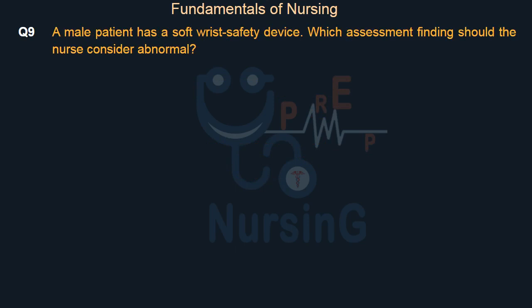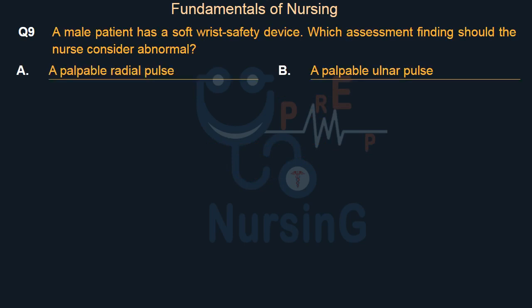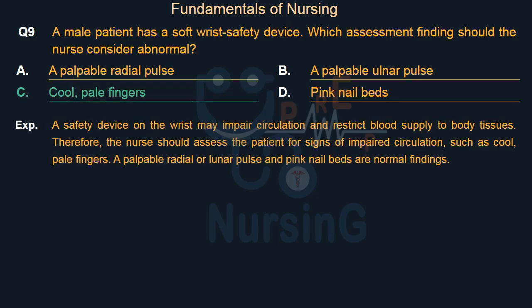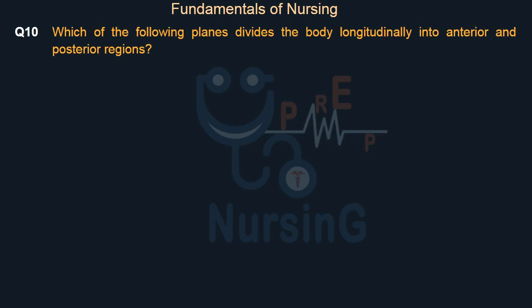A male patient has a soft wrist safety device. Which assessment finding should the nurse consider abnormal? Option A: A palpable radial pulse. Option B: A palpable ulnar pulse. Option C: Cool, pale fingers. Option D: Pink nail beds. The right answer is Option C: cool, pale fingers. A safety device on the wrist may impair circulation and restrict blood supply to body tissues. Cool, pale fingers indicate impaired circulation, while a palpable radial or ulnar pulse and pink nail beds are normal findings.